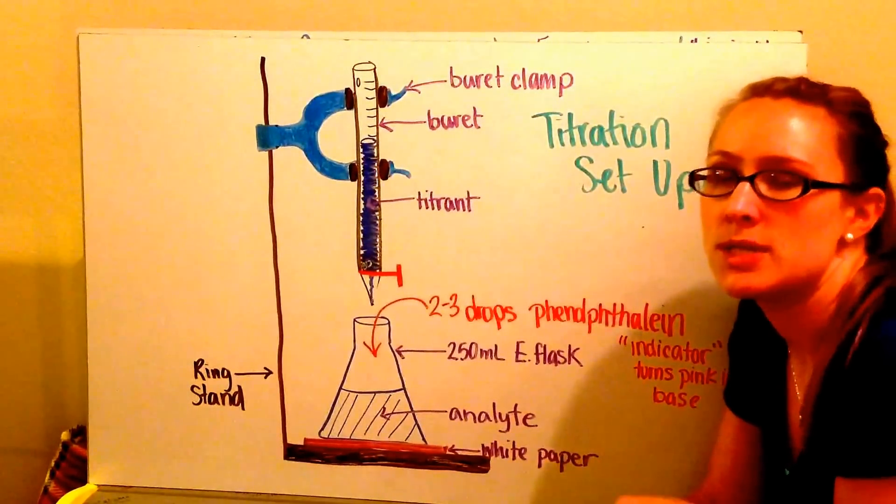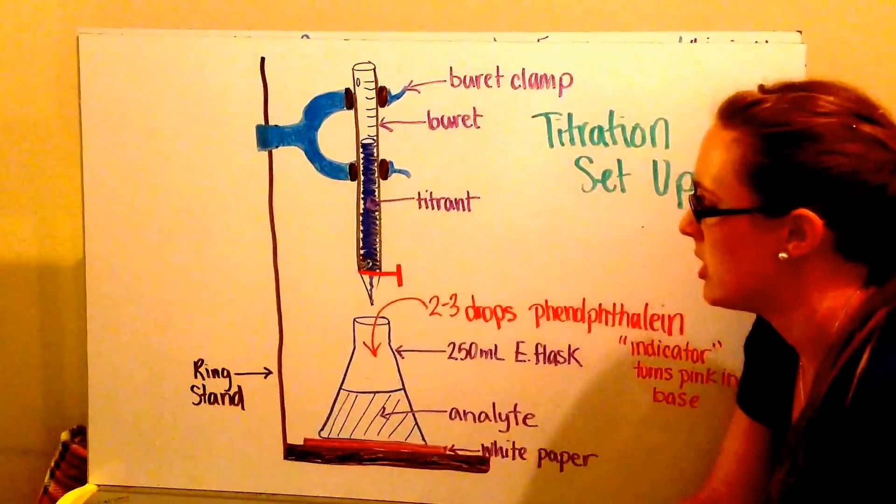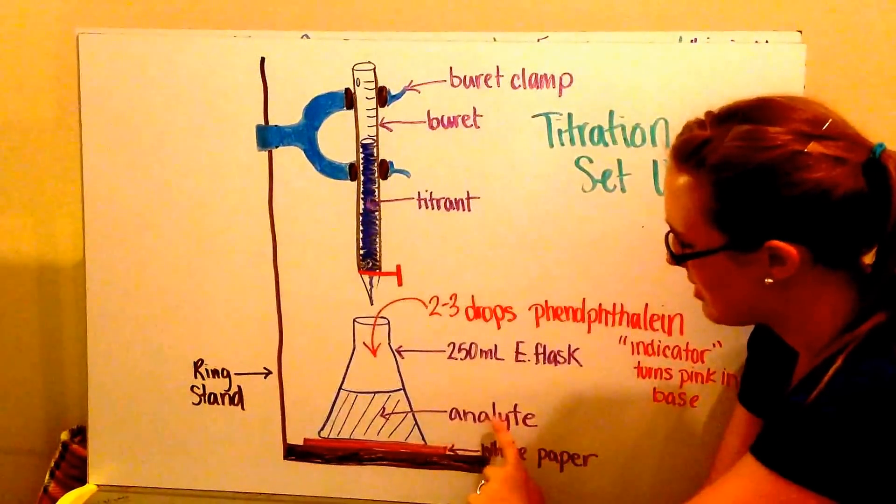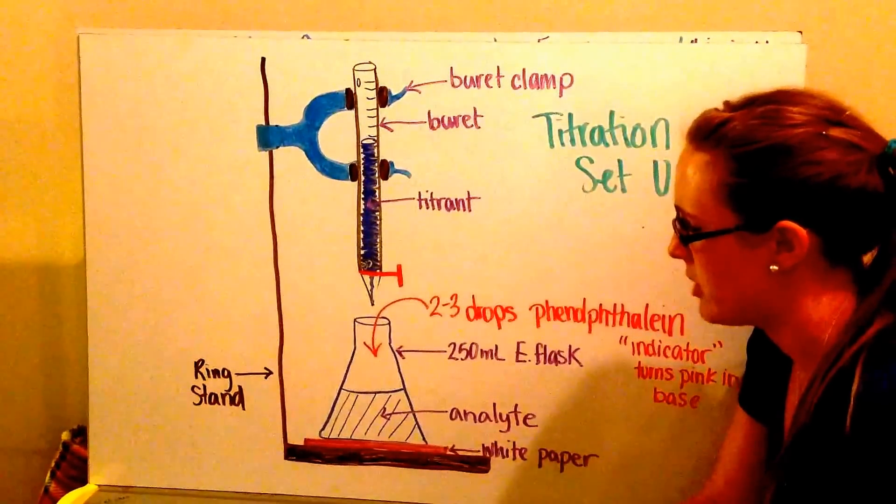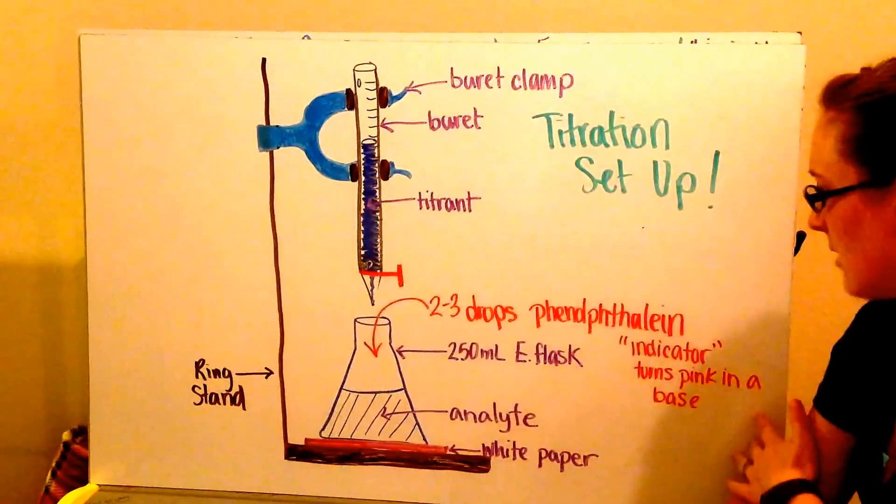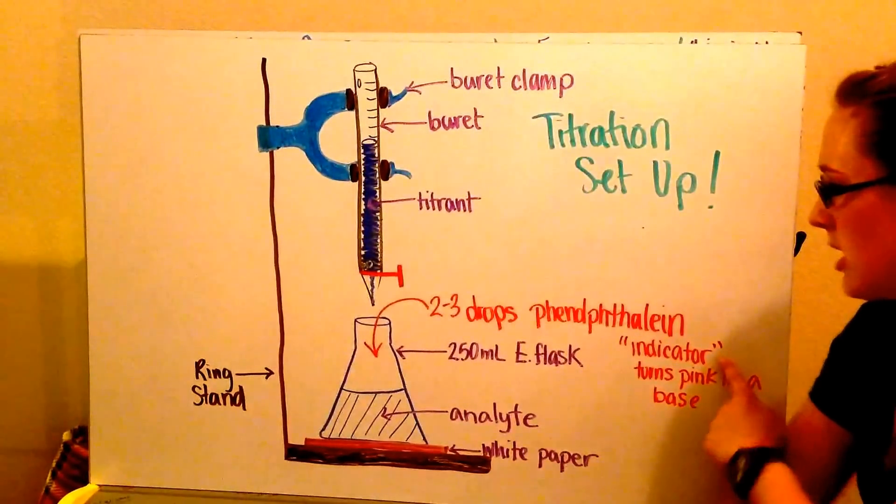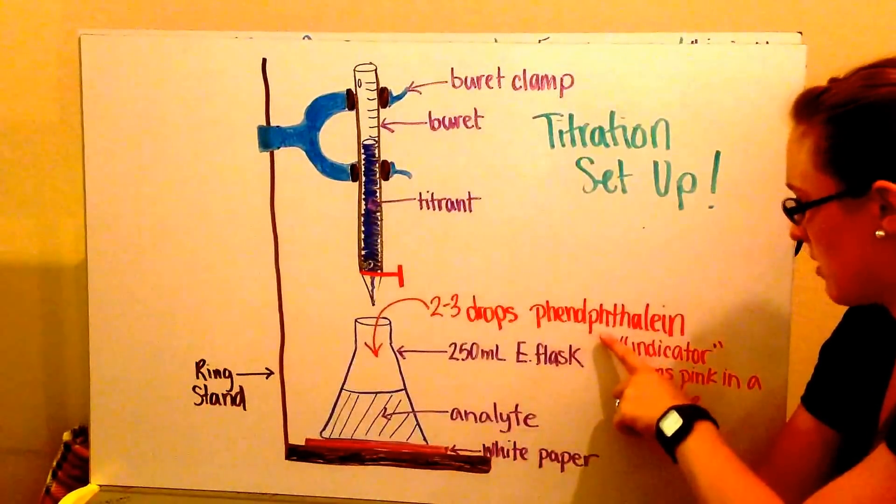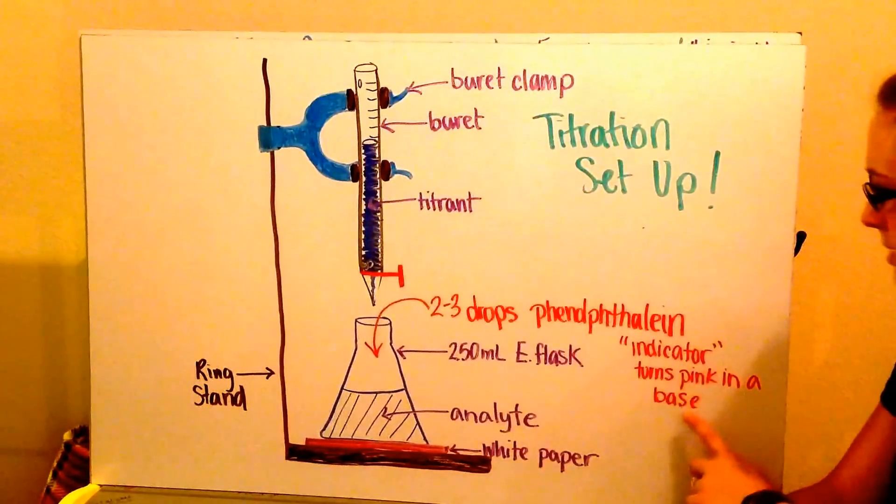Titration is where you use the titrant of known concentration to add to an analyte, a solution of unknown concentration, to find the endpoint via an indicator. In our case we'll have two to three drops of phenolphthalein that turns pink in a base.